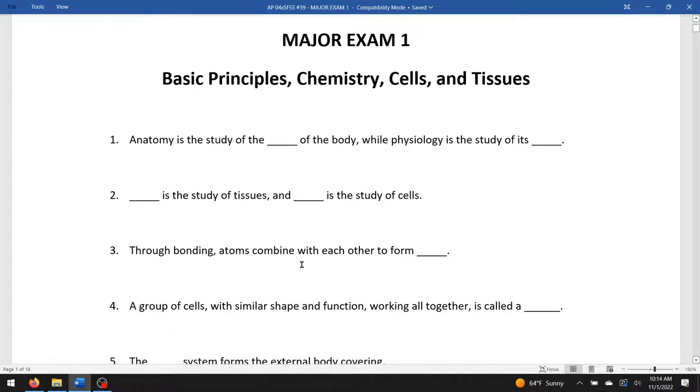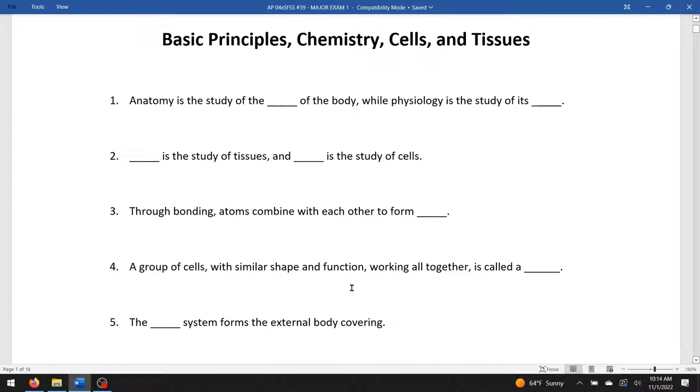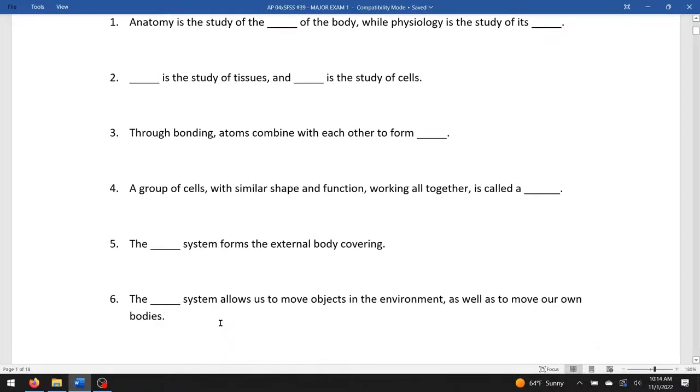Through bonding, atoms combine with each other to form molecules. A group of cells with similar shape and function working all together is called a tissue. The blank system, asking for one of the 11 body systems, forms the external body covering. That would be the integument system. The blank system allows us to move objects in the environment, as well as to move our own bodies. So that's the muscle or muscular system.